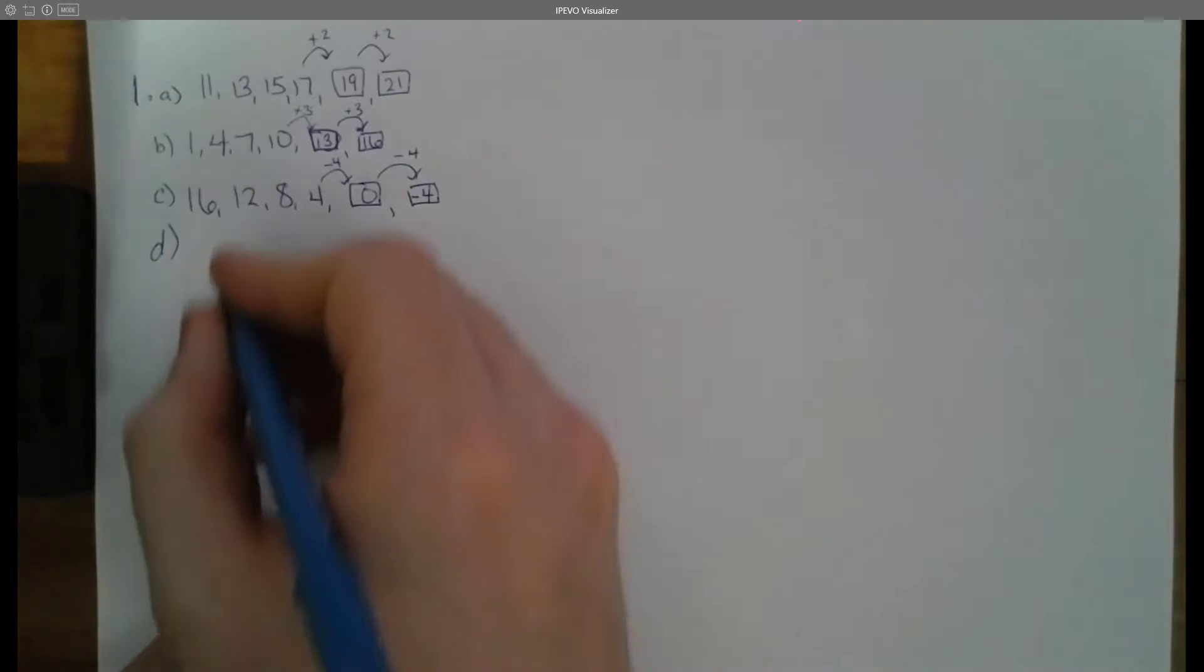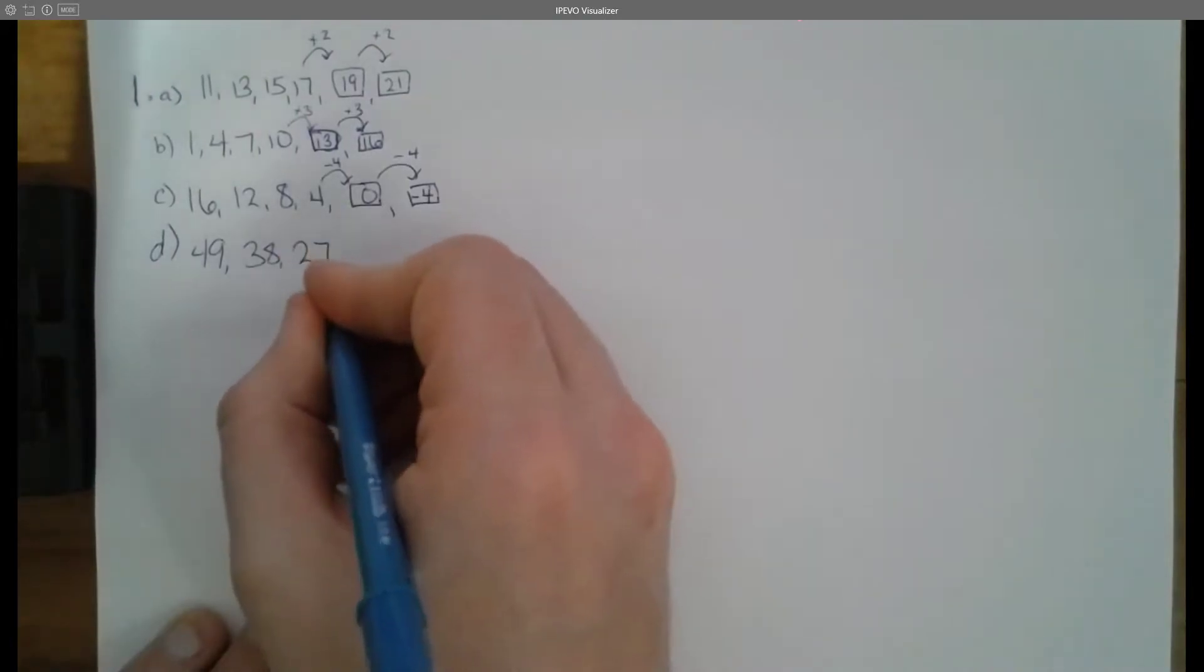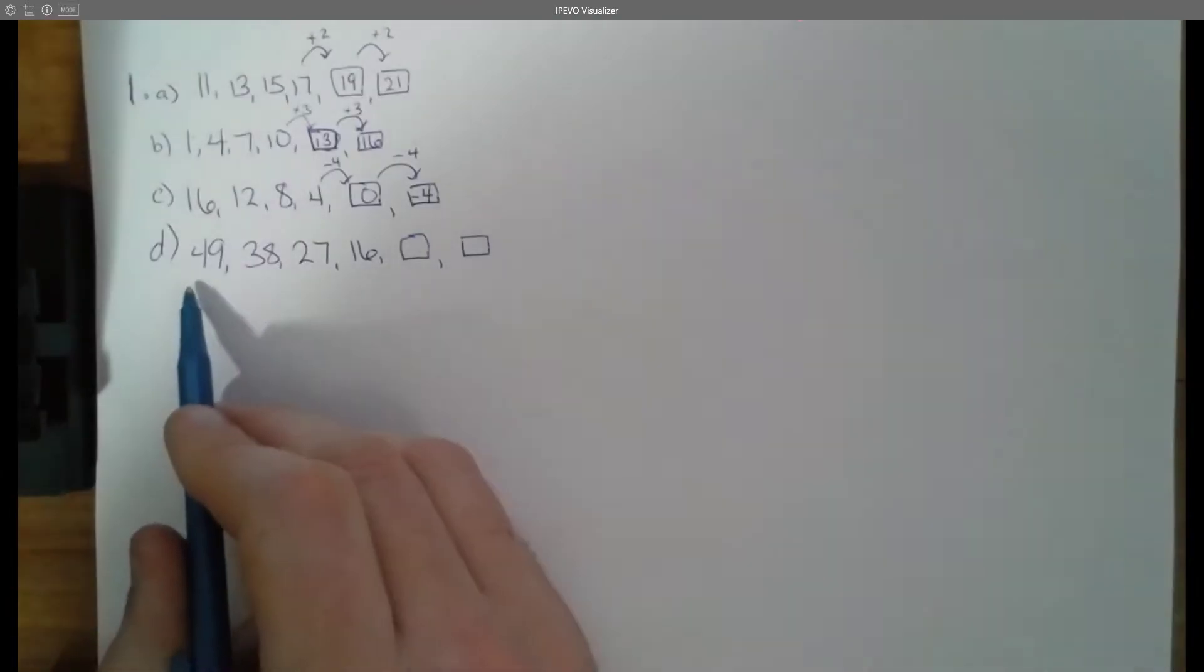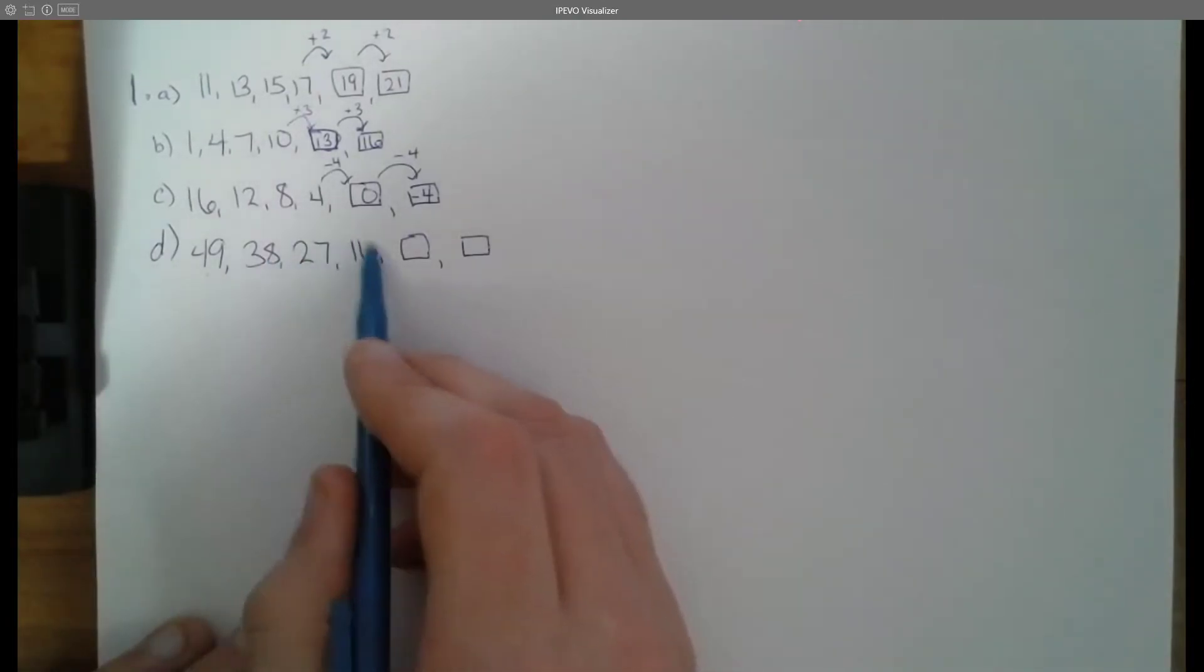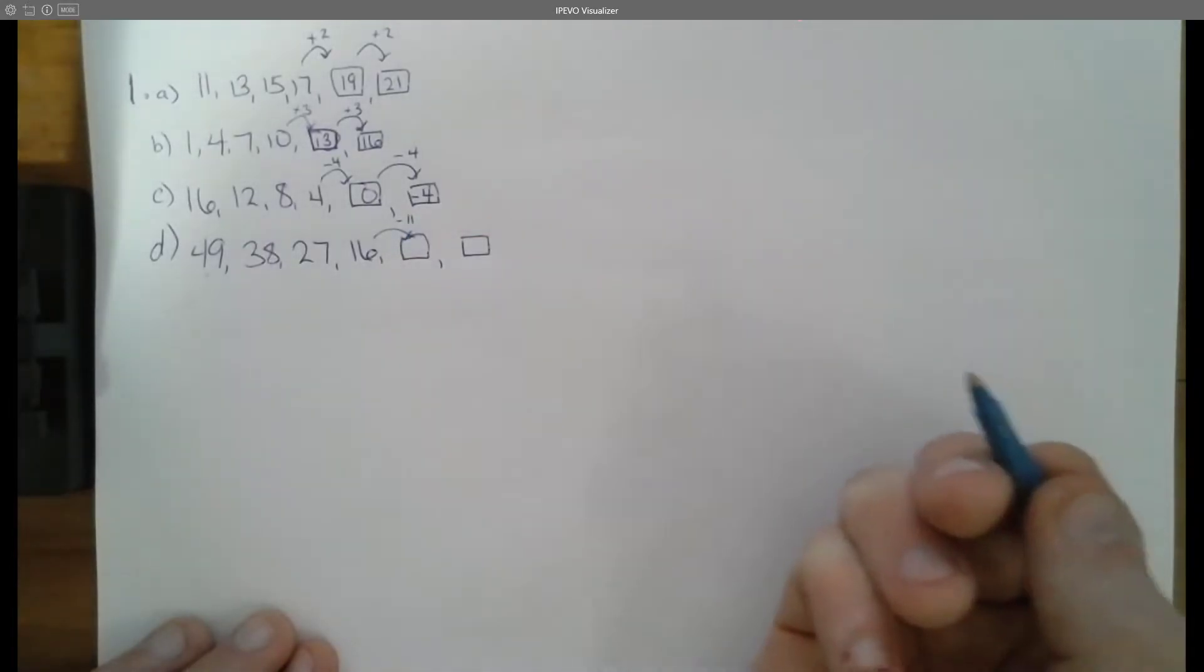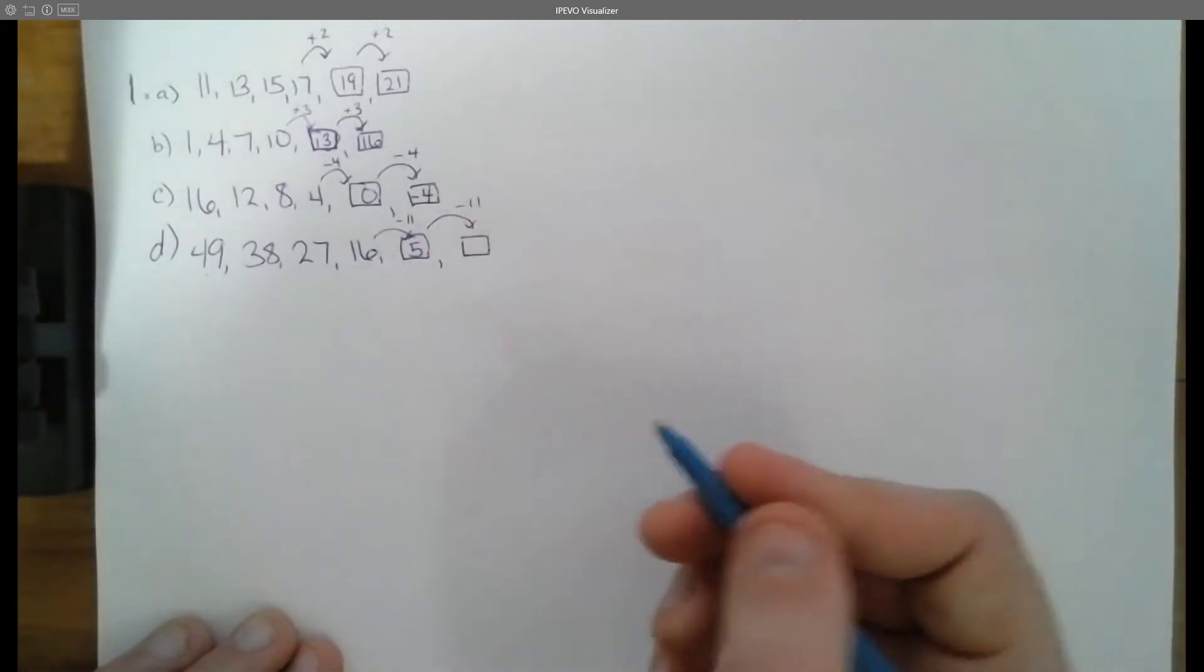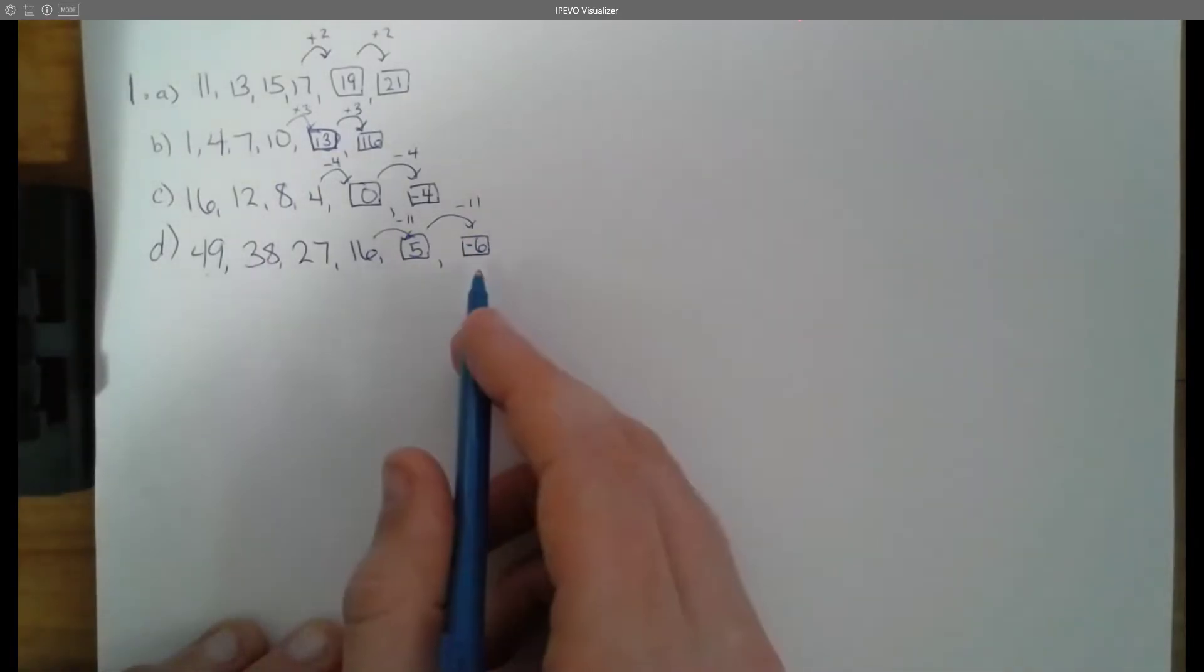Let's take a look at D to finish off question number 1. 49, 38, 27, 16. Fill in the blanks. Again we are going down. We want to see if we're going down by the same amount. To get from 49 to 38 we are decreasing or subtracting by 11. To go from 38 to 27 we're going down by 11. 27 to 16 we're going down by 11. So 16 to our next term we must be subtracting 11 from that which is going to give us 5. Then to go from 5 we're subtracting 11 from that which will give us negative 6. So those would be the next two terms here.